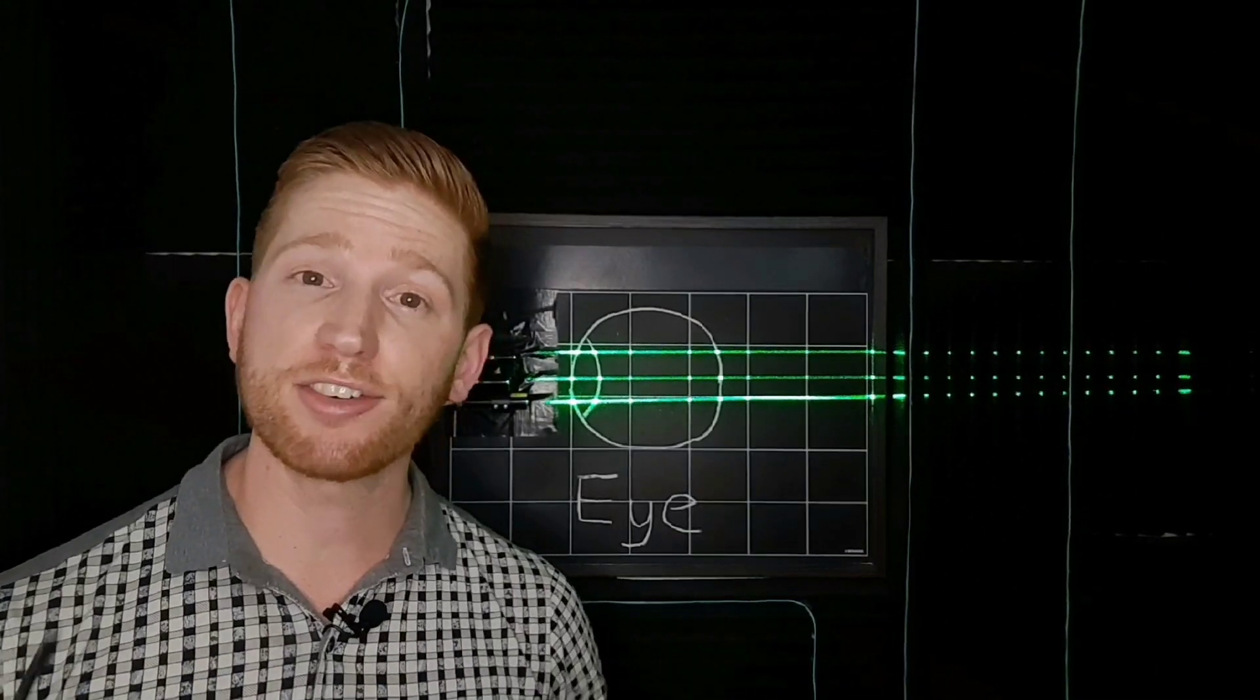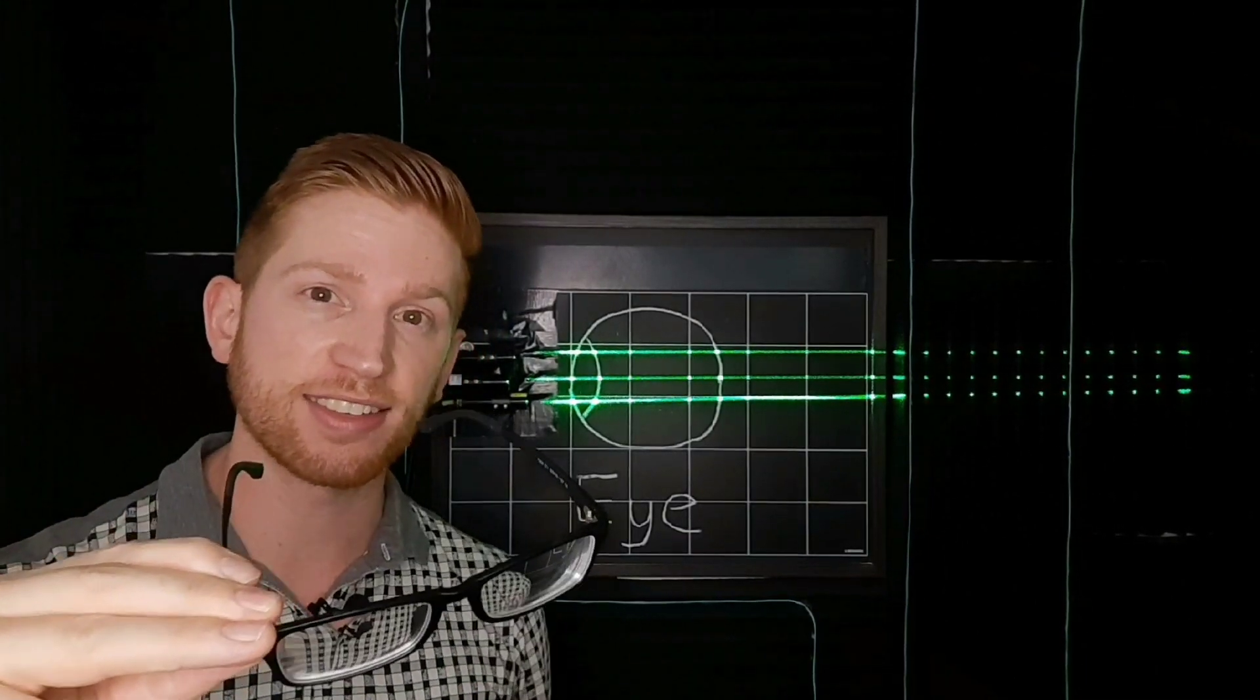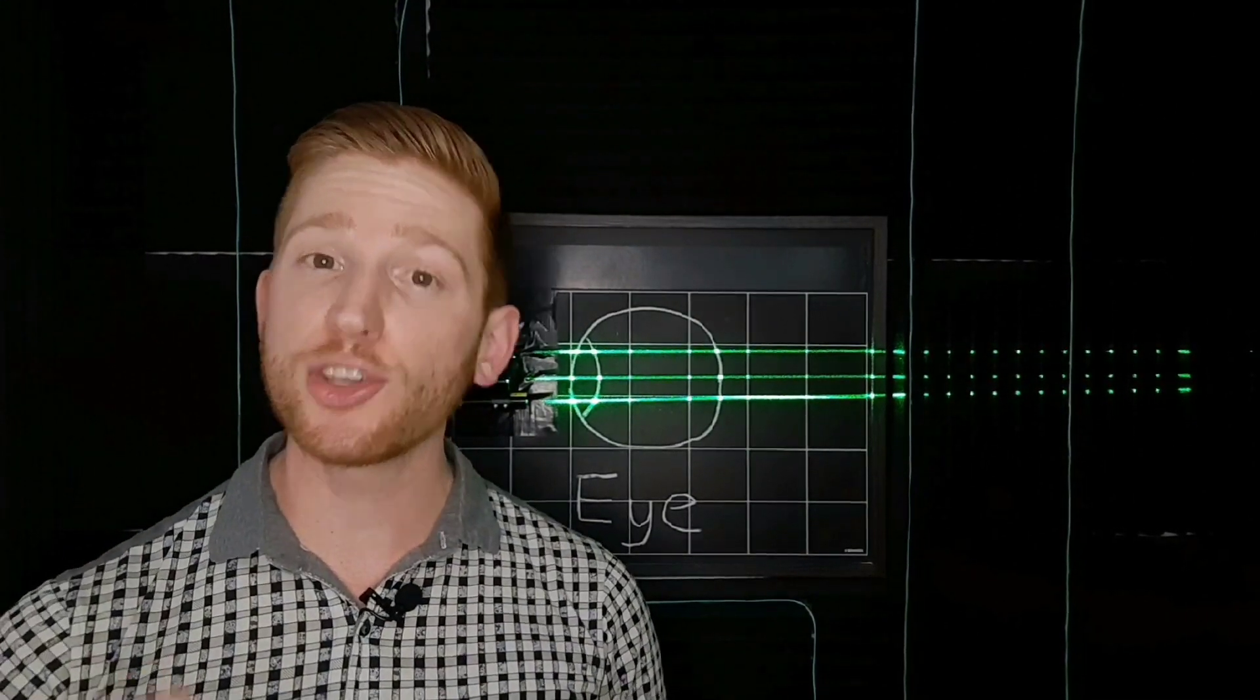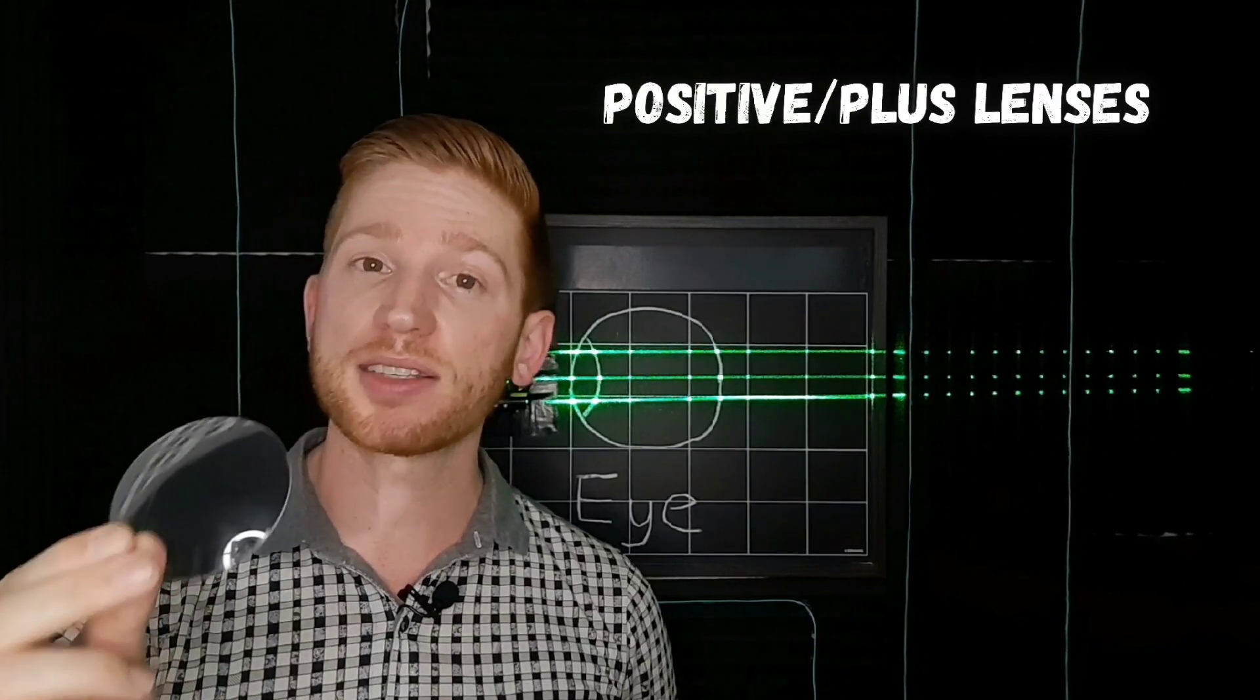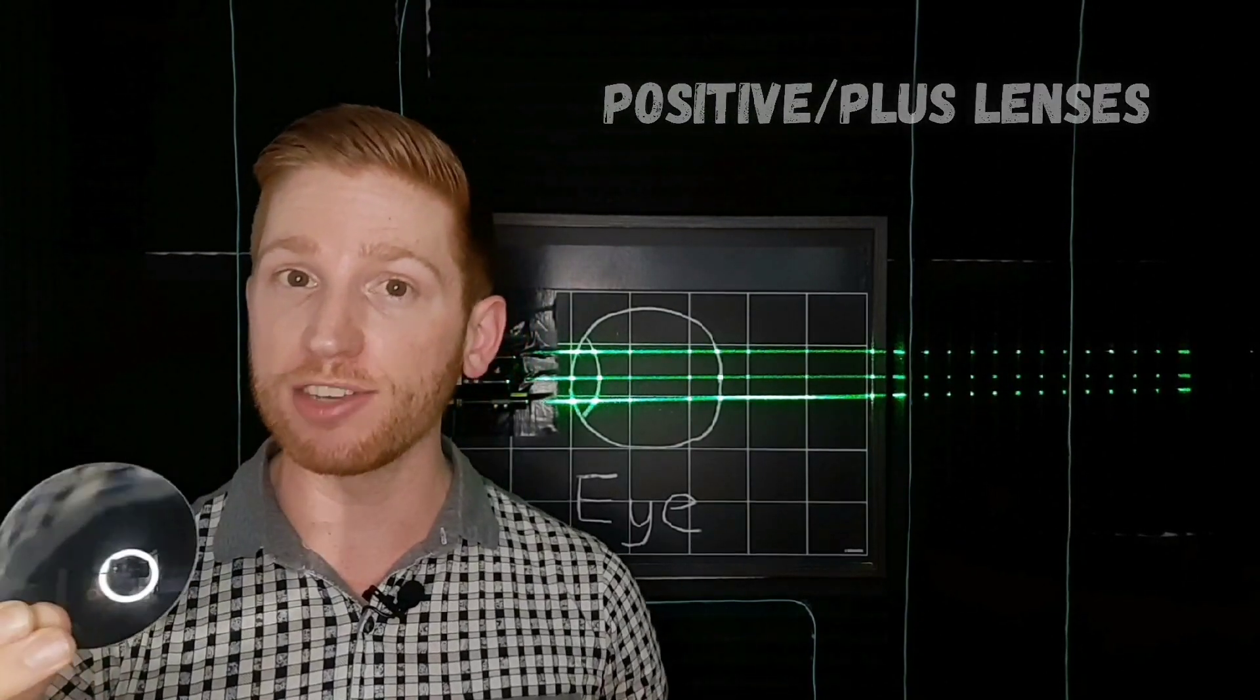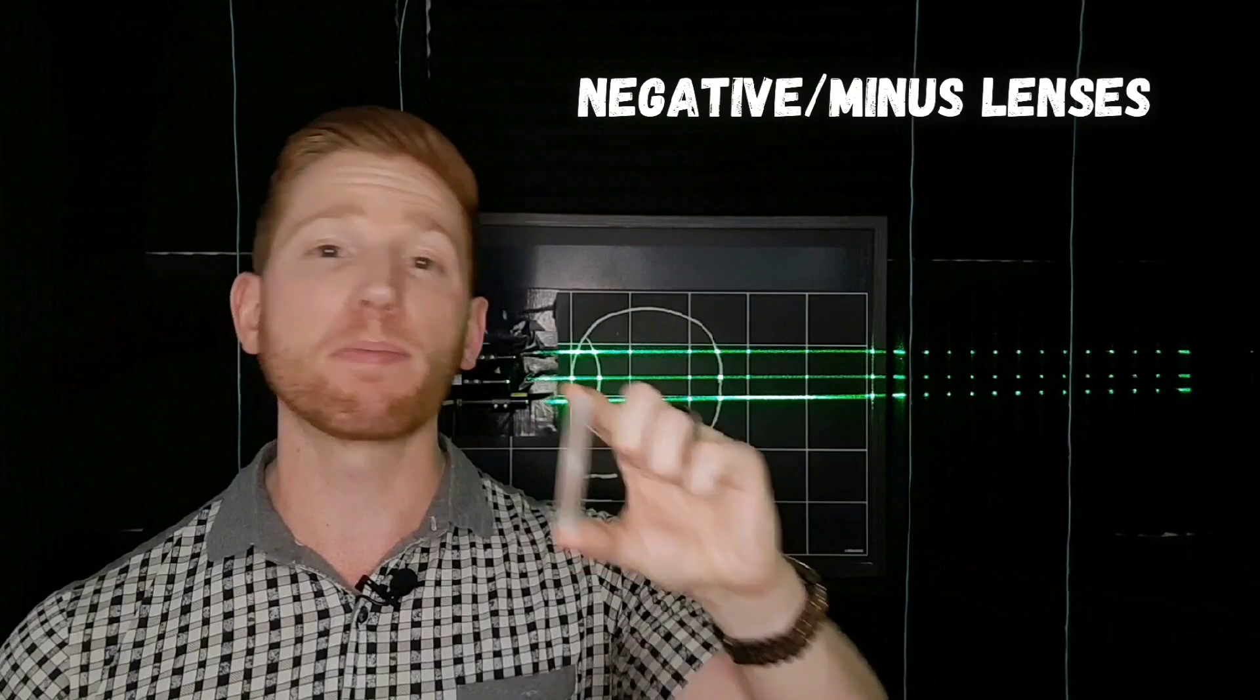So that's what's wrong with your eyes. Here's how glasses fix those things. First, you need to know that there are two main types of lenses. Positive or plus lenses, which are the kinds of lenses we've been using so far, and negative or minus lenses.